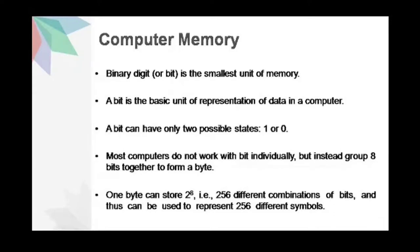Most computers do not work with bits individually, but instead a group of 8 bits together forms a byte. One byte can store 2 to the power 8, that is 256 different combinations of bits, and thus can be used to represent 256 different symbols. In a byte, the different combinations of bits fall in the range 8 zeros to 8 ones. A group of bytes can be further combined to form a word. A word can be a group of 2, 4, or 8 bytes.